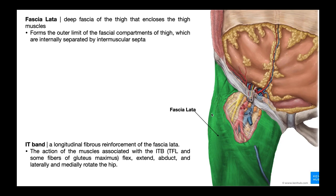If we look at the lateral aspect of the thigh, we would actually see a thickening of the fascia lata. This thickening is going to be the IT band, or the iliotibial band. The IT band is really just a thickening of the fascia lata, and by definition it is a longitudinal fibrous reinforcement of the fascia lata — a tougher, thicker, stronger region of it.